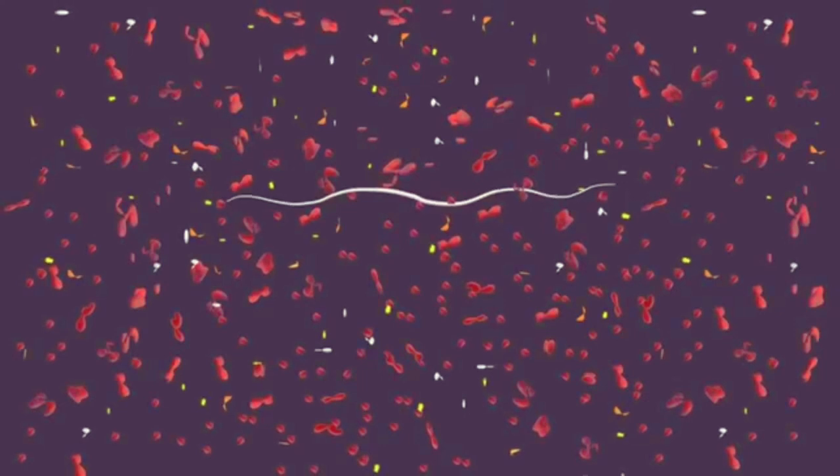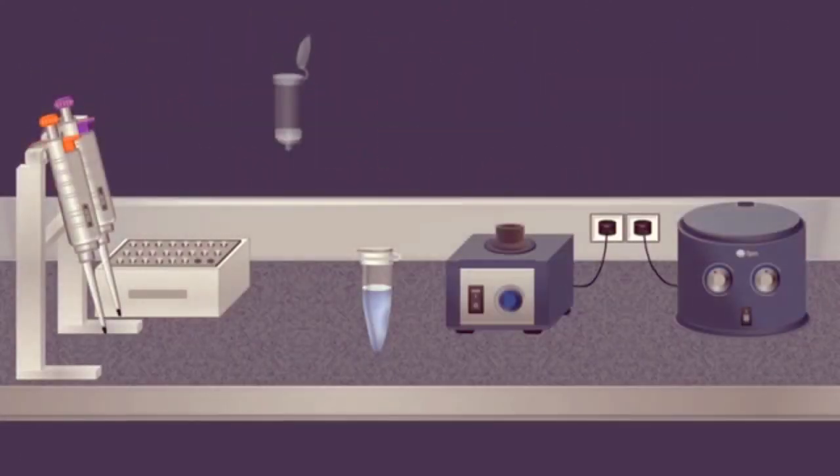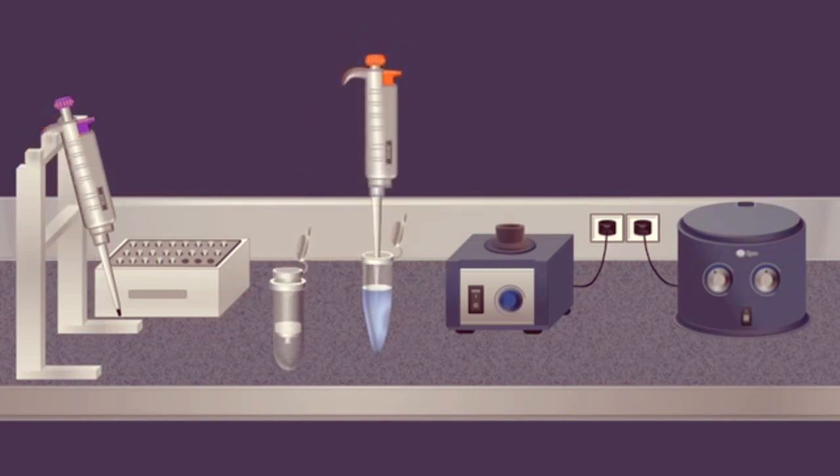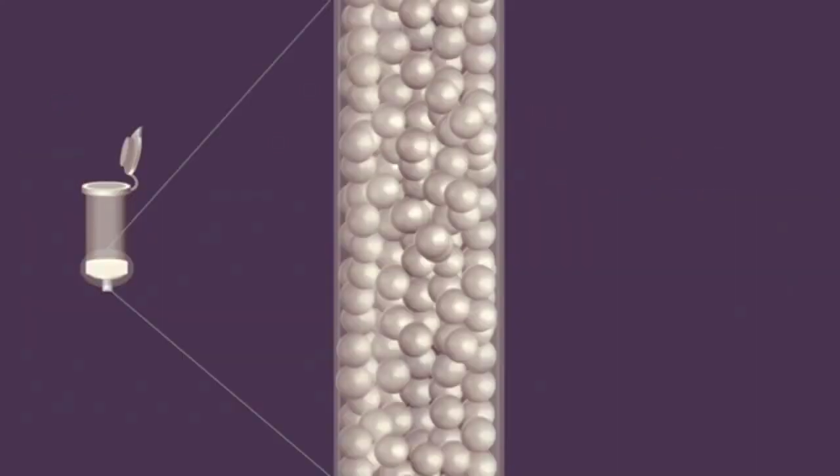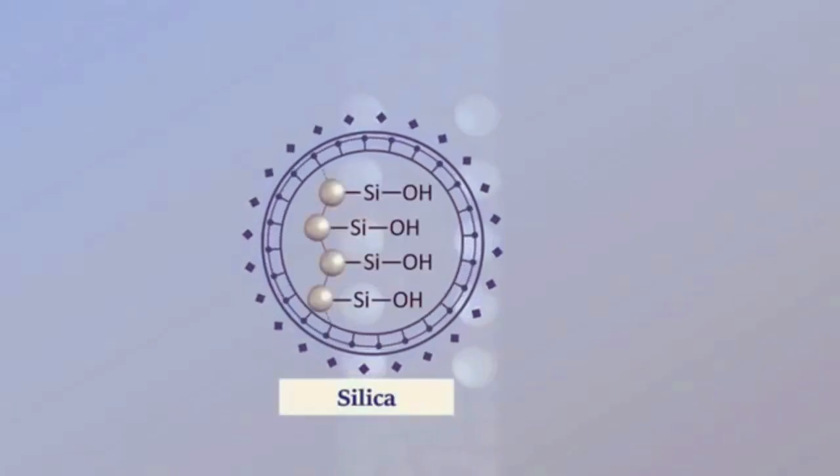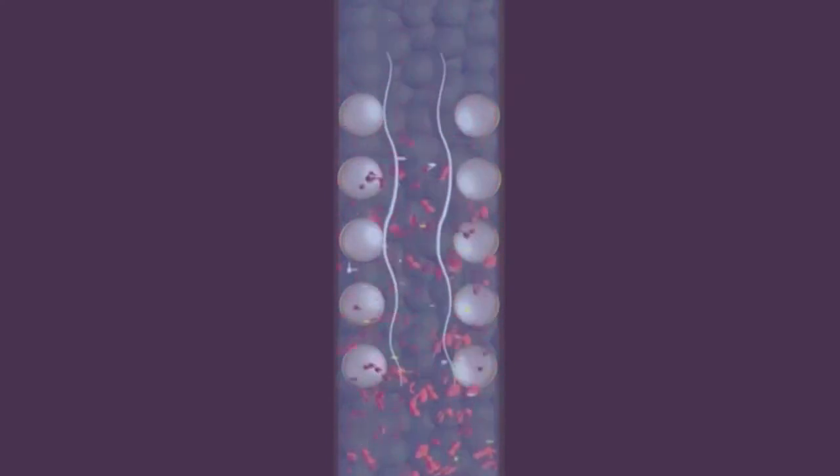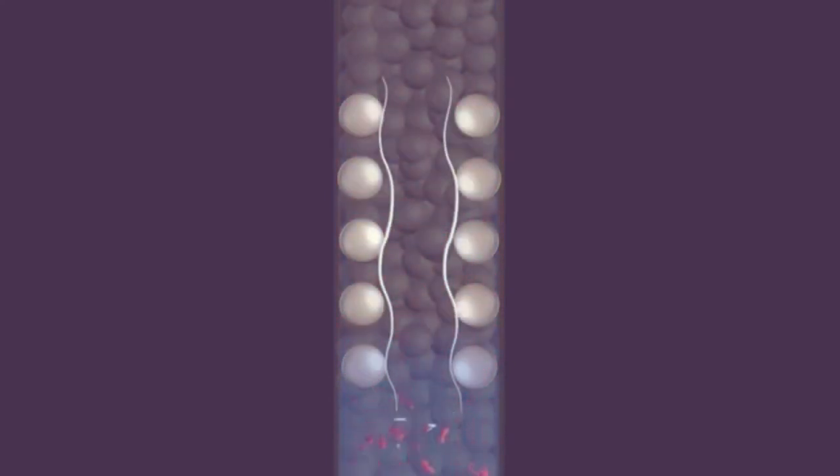Once the sample is lysed, a purification procedure is carried out by using a spin column. The sample is loaded onto the spin column, then a centrifugation is performed. This procedure is a solid phase extraction method, in which the stationary phase consists of a silica matrix. Under optimal salt and pH conditions, RNA molecules bind to the silica gel membrane, and at the same time, protein and other contaminants are not retained.